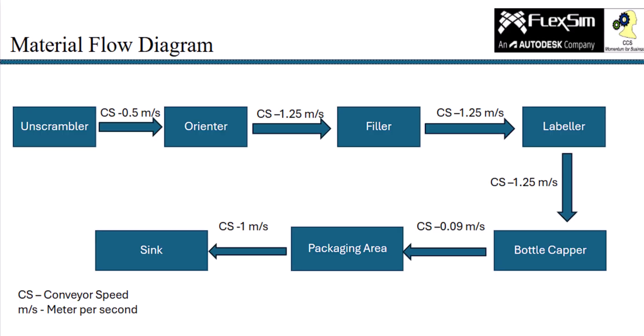Let's get started. In the material flow, the bottling line begins with the unscrambler, where bottles are introduced into the system. From there, the bottles move to the orienter machine via a conveyor running at 0.5 meters per second.